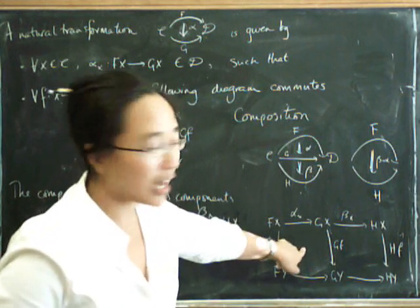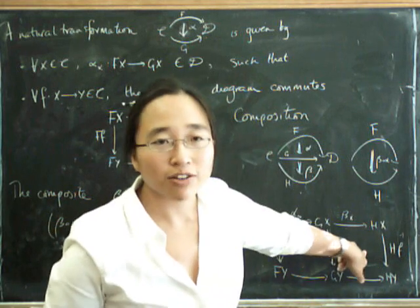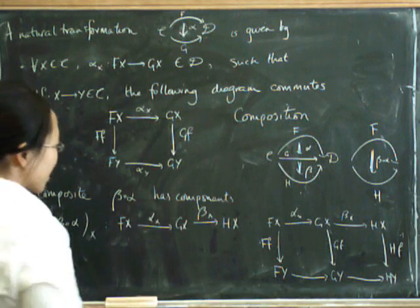This diagram commutes because of the naturality of alpha. And this square commutes because of the naturality of beta, so the entire thing commutes. So this really is natural.